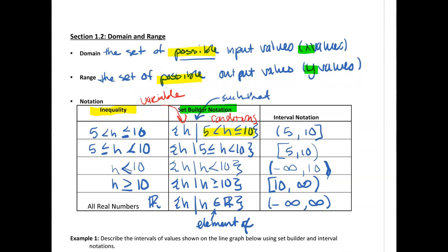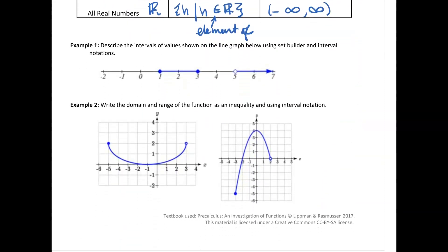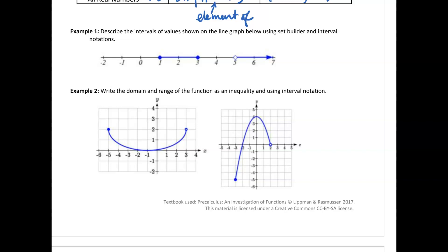Let's move forward and look at situations where we need to identify domain and range. This problem says: describe the intervals of values shown on the line graph using set builder and interval notation. So I need to do both set builder and interval notation. Looking at the graph, we can see values between 1 and 3, and values starting at 5. There's a parenthesis at 5, so interval-wise I want all values between 1 and 3, and values starting at 5 but not including 5 going to positive infinity.